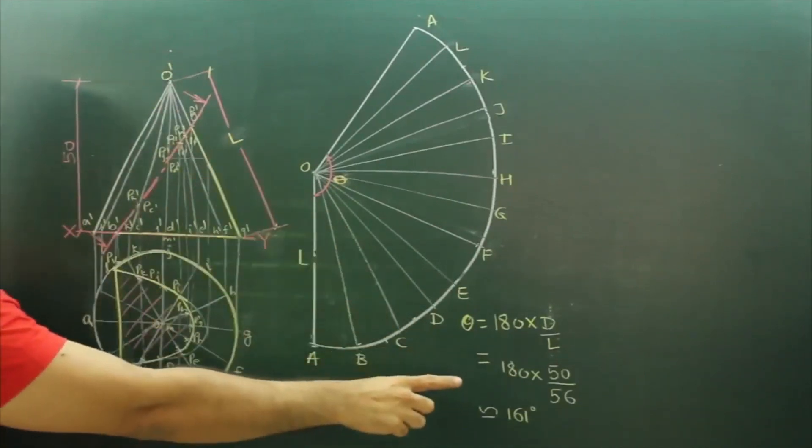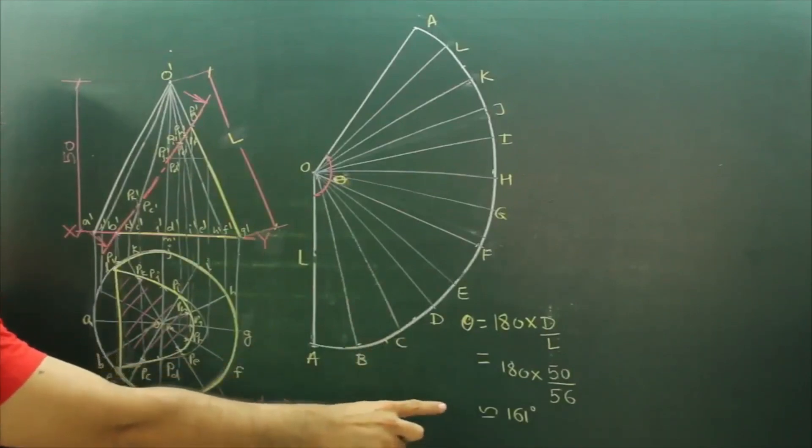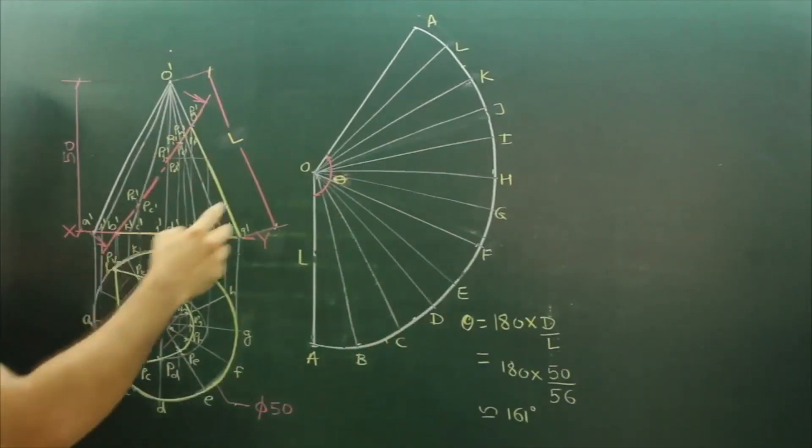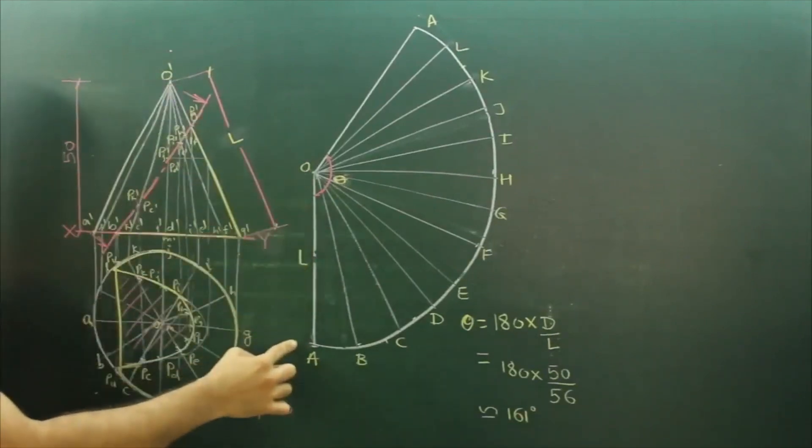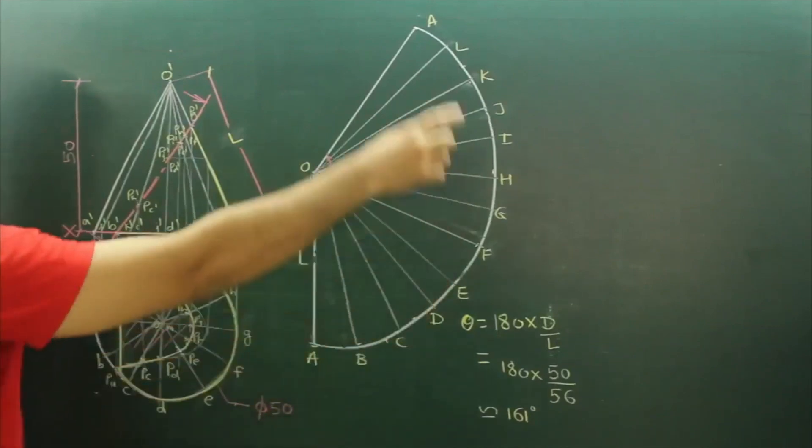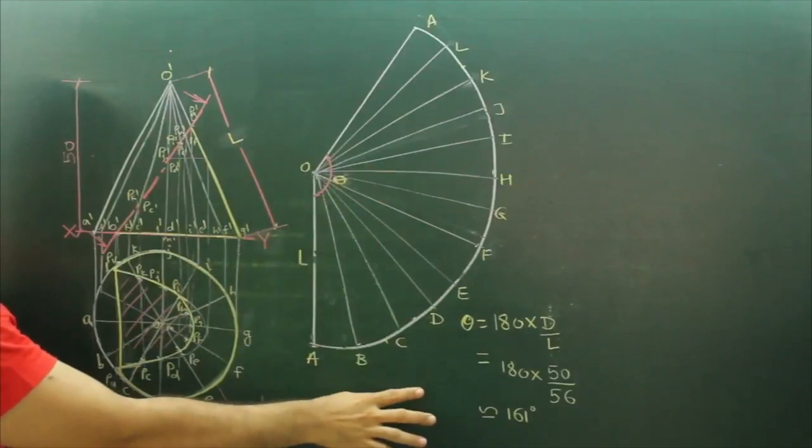For development of a cone, you take the slant length into account, not the axis. The angle comes out to 161 degrees. Take one line 56 straight, rotate it, and take the angle 161, then divide this into 12 parts.